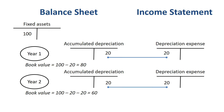The difference between depreciation expense and accumulated depreciation is that depreciation expense appears as an expense on the income statement, and accumulated depreciation is a contra-asset reported on the balance sheet. The income statement is reset to zero at the start of every year, so you start with zero in depreciation expense every year and build it up in 12 monthly increments.